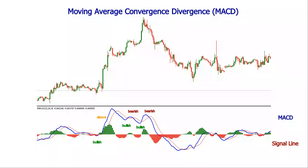When the MACD is above the signal line, the histogram values are positive. When the MACD is below the signal line, the histogram values are negative. The histogram grows larger as the speed of price movement accelerates, and it contracts as price movement decelerates, making it a good momentum indicator. The crossover of the MACD and the signal line is a reliable signal when the momentum is increasing and confirmed by the histogram.